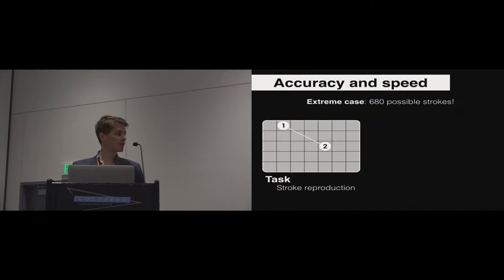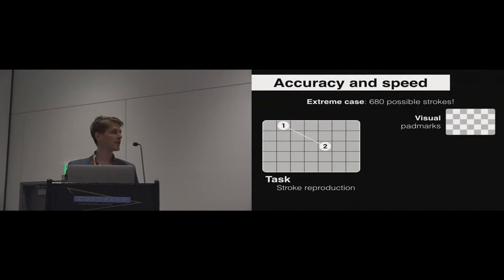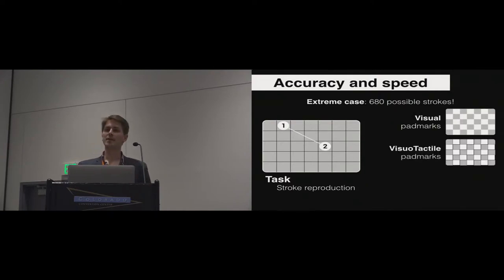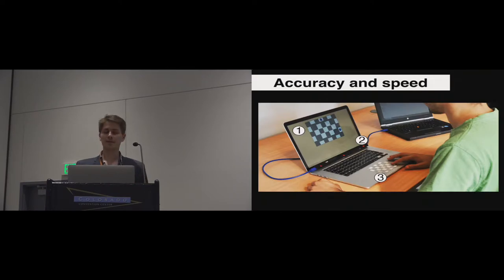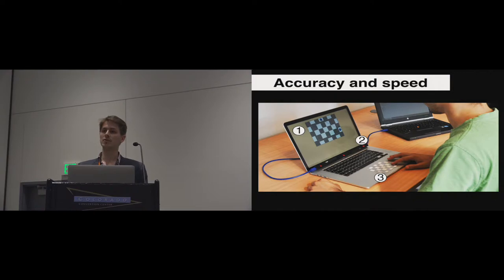The task was just to reproduce a stroke — it was shown to the user where he should start and where he should end — and we used three different conditions. First, using only visual pad marks on the touchpad. A second condition with visual-tactile pad marks. And finally, as the tactile feedback can be disturbing when the user is just pointing on the touchpad, we used a third mixed condition, with visual-tactile pad marks on the border and visual pad marks at the center of the touchpad. We also used a gaze tracking device to see if users looked more at the touchpad using visual pad marks than visual-tactile pad marks.